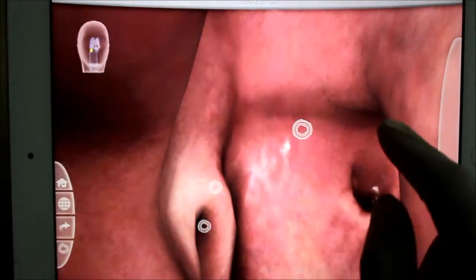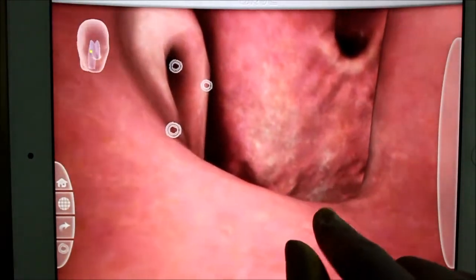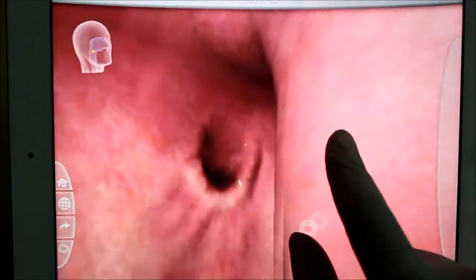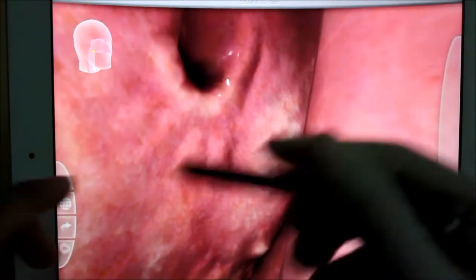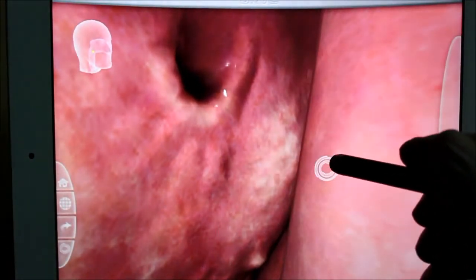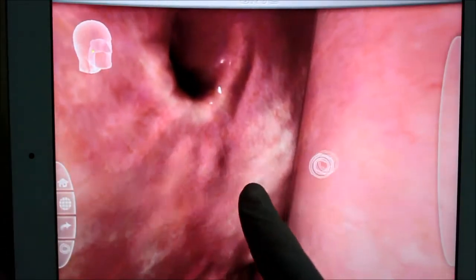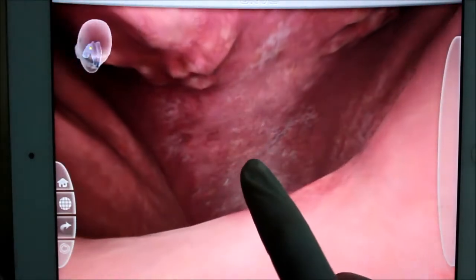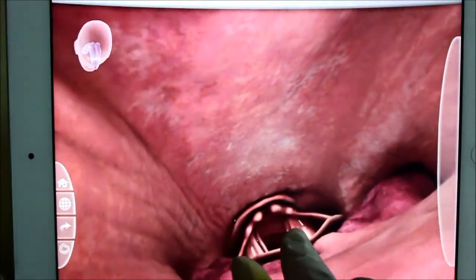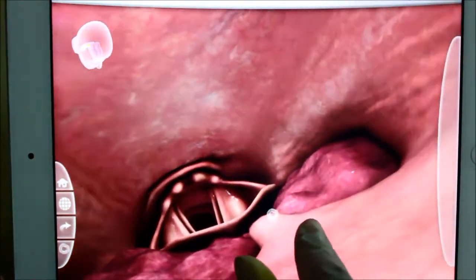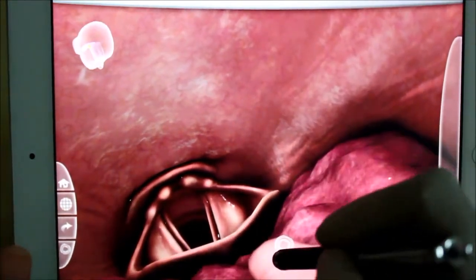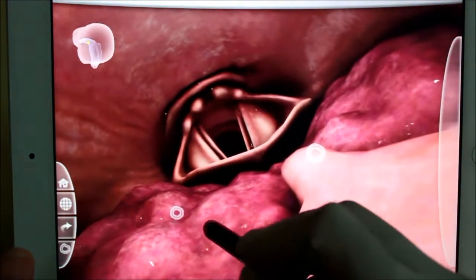nasopharynx. It is the posterior choana. Now moving downwards, it's the end of the nasal septum. You can see the vomer. Now as we go down we will see the uvula.